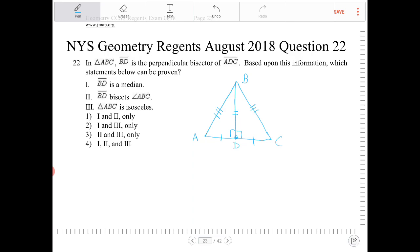So option one says BD is a median. Is that a true statement? That is absolutely a true statement because a median is a line segment that's drawn from a vertex to the opposite side bisecting the opposite side. There's no requirement for the angle formation between the median and the opposite side. So therefore, that's a median.